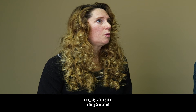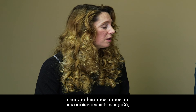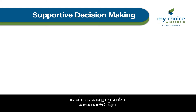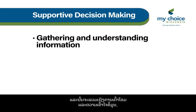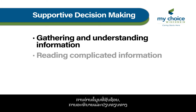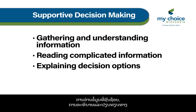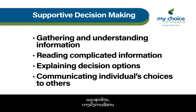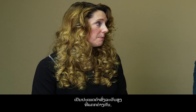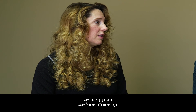Sometimes people wonder what kind of things supportive decision making supporters can help with. That would include gathering and understanding information, reading complicated information, explaining and comparing options to help make a decision, and finally, sometimes communicating the individual's choices to others once they learn what those are. Supported decision making is a different type of advanced directive — it's really an agreement between the individual and the supporter that allows the individual to maintain independence.